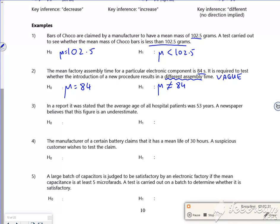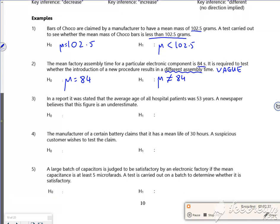The third one says in a report it was stated that the average age is 53, μ equals 53. You want to see if it's an underestimate, so we're actually expecting the ages to be higher. There's another two there you can have a go at if you want to.